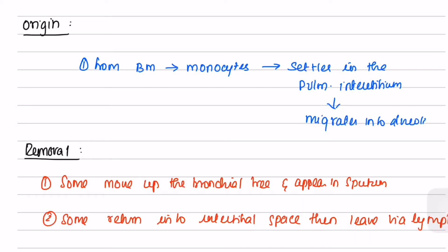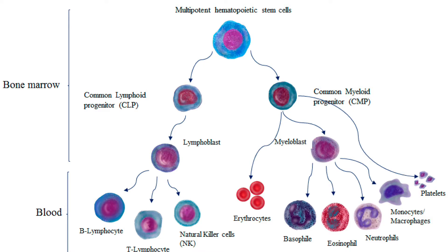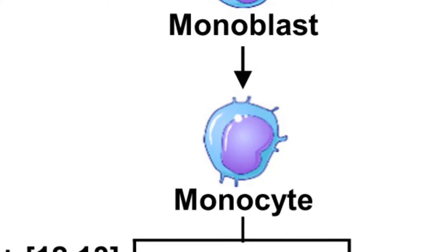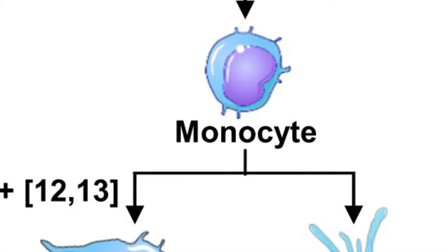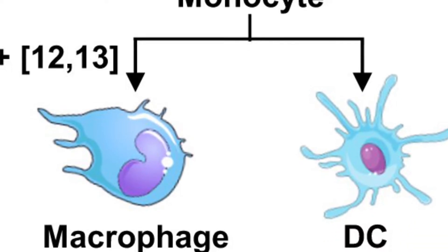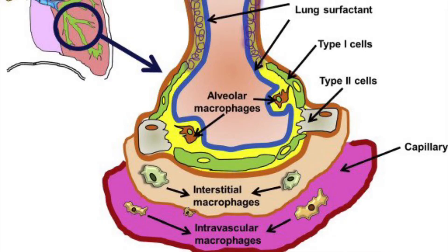The origin of the alveolar macrophages: alveolar macrophages originate from the bone marrow from the common myeloid progenitor. These myeloid cells further differentiate into myeloblast that give rise to monocytes. Monocytes travel in the bloodstream and get matured in the connective tissue of the organ to form macrophages. They settle in the pulmonary interstitium and they migrate into the alveolar space.